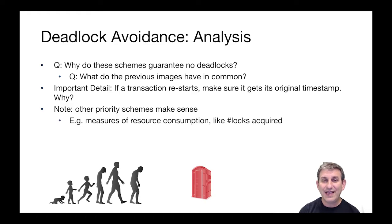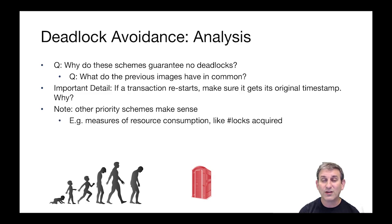As a final note, transaction age isn't the only way we can prioritize transactions. We can use other priority schemes like the amount of resources a transaction has consumed in its lifetime — such as the number of locks it ever acquired or the number of IOs it's ever done. The idea is that a transaction that's done a lot of work should eventually be able to complete all of its work, otherwise it'll keep trying and failing and bog up the system with useless work.